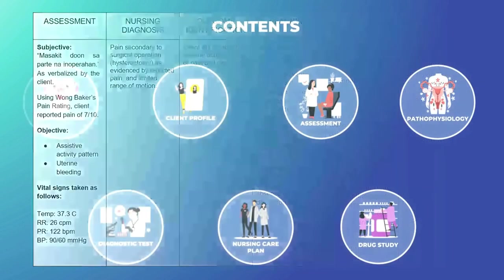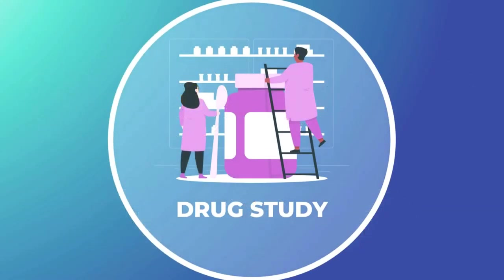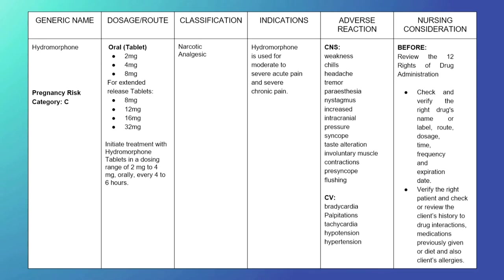For the first drug study: generic name — hydromorphone; pregnancy risk category C; dosage route — oral tablets: 2 mg, 4 mg, and 8 mg; extended release tablets: 8 mg, 12 mg, 16 mg, and 32 mg. Initiate treatment with hydromorphone tablets in a dosing range of 2 mg to 4 mg orally every 4 to 6 hours. Classification: narcotic analgesic. Indication: hydromorphone is used for moderate to severe acute pain and severe chronic pain.